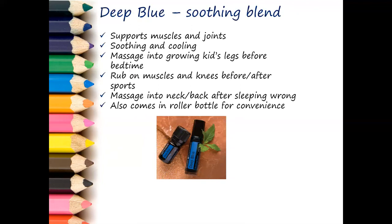Deep Blue is for muscles and joints — it helps calm inflammation and everything attached to that. Cutting back on sugar also really helps with inflammation. During the holidays people get sick not just from being in crowded rooms, but from not drinking enough water and eating more sugar, which wreaks havoc on the immune system. Deep Blue is soothing — you can massage it on kids during growth spurts when their shins and legs ache, on muscles and knees before and after sports, or on your neck after sleeping wrong. It comes in a roller bottle too.